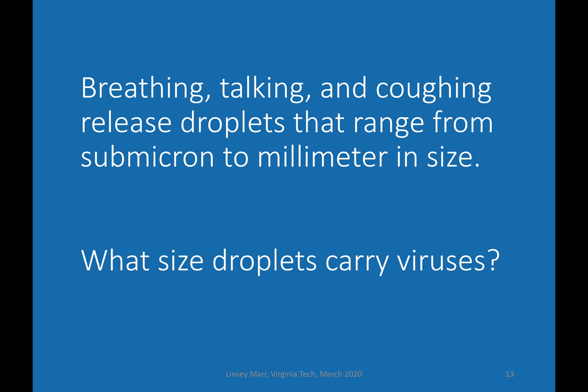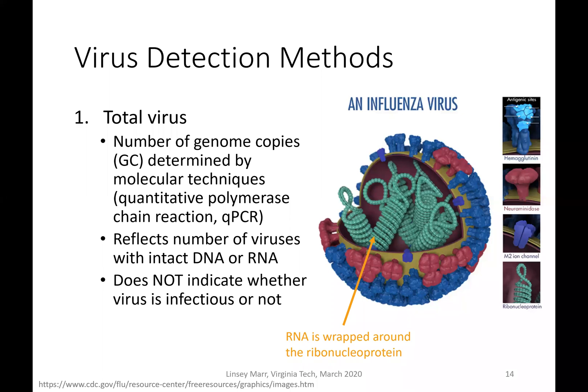Breathing, talking, and coughing release droplets ranging from submicron to millimeter in size. But we want to know where is the virus — what size droplets actually carry viruses? You might think the virus should scale with the volume of those droplets, but that doesn't necessarily seem to be the case. Before looking at that data, we need to cover two different methods for measuring viruses in a sample. The first method measures the total amount of virus present by counting the number of genome copies, determined by quantitative polymerase chain reaction or qPCR. This reflects the number of viruses with intact DNA or RNA — some viruses have DNA, others have RNA — but it does not indicate whether the virus is infectious.